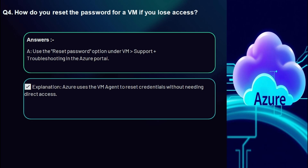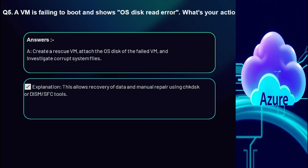Question 4: How do you reset the password for a VM if you lose access? You can use the 'Reset Password' option under the VM in the Azure portal. Azure uses the VM agent to reset credentials without needing direct access.